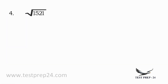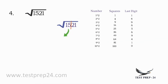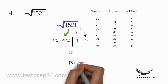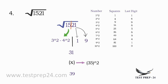Next question: what is the square root of 1521? Draw a line to get two parts: 15 and 21. 15 lies between 3 square and 4 square, so the first digit is 3. For 21, the last digit is 1, so the possibilities are 1 or 9 — answer is either 31 or 39. Take the in-between number 35: 3 × 4 = 12, so 35 square is 1225. Since 1521 is greater than 1225, the answer is 39.